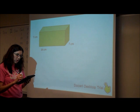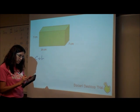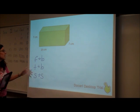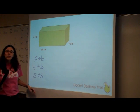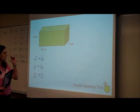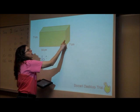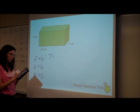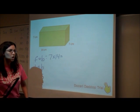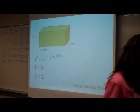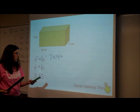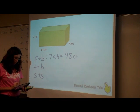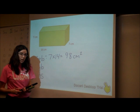Let me change my pen color. We have the front and the back, we have the top and the bottom, and we have the side and the side. Each of these are rectangles, so the area is going to be length times width, or base times height. If I look at my front, its dimensions are 7 by 14. So the area of the front will be 7 times 14, which is 98. My front is 98 square centimeters, because it's area, so it's squared.